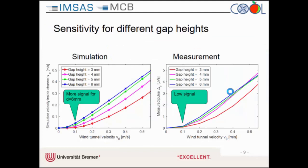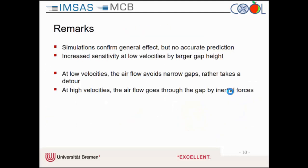We found that the sensitivity at low velocities depends very much on the height of the gap, so we tested different gap heights, first by simulation. As you can see, for a low gap height of 3 mm the curve is almost parabolic, and it gets more and more linear when we increase the gap height. We expected good sensitivity for a gap height of 6 mm, but unfortunately this was not confirmed by our measurements. We were able to increase the sensitivity, but absolutely not to the amount expected by the simulations.